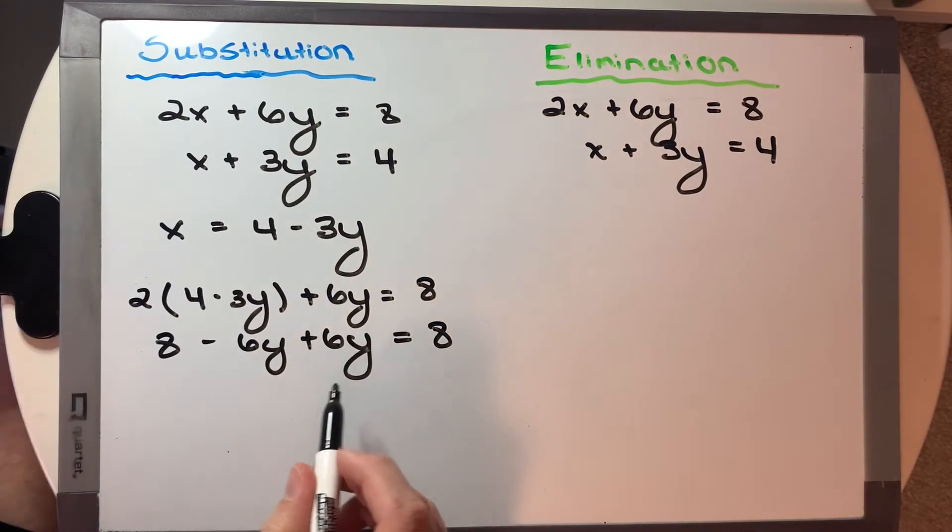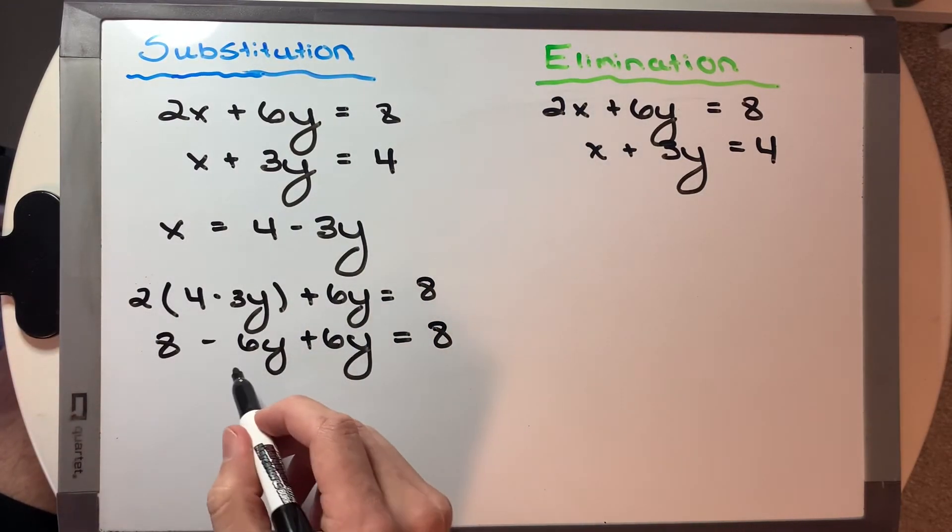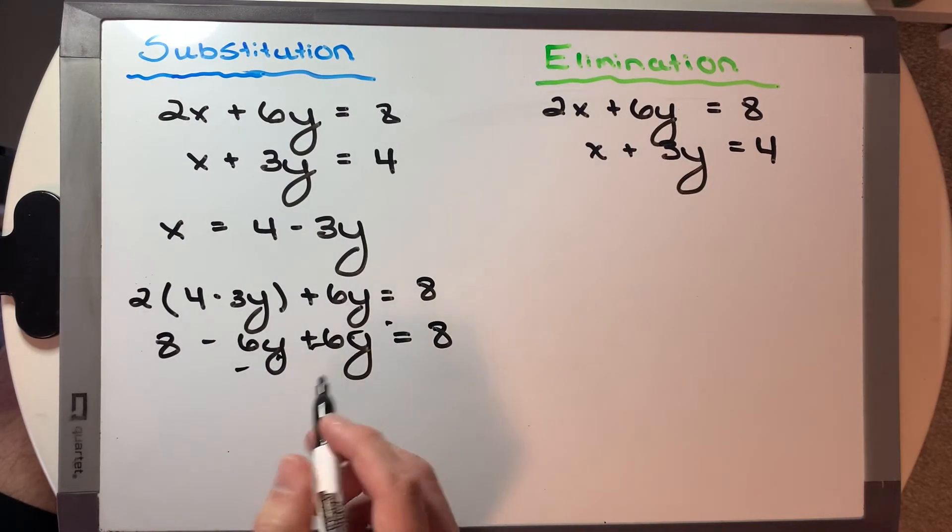And then we get 8 minus 6y plus 6y is equal to 8. And therefore, the 6y terms are going to cancel out.